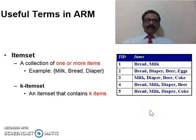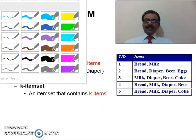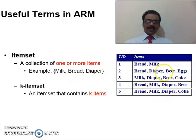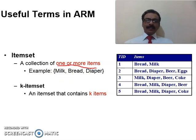Before going into more details, let us learn some important terms used in association rule mining. The first one is item set — a collection of one or more items. For example, milk, bread, and diaper together form an item set. Even if only bread itself is in a set, we can say it is an item set, because an item set requires one or more items.